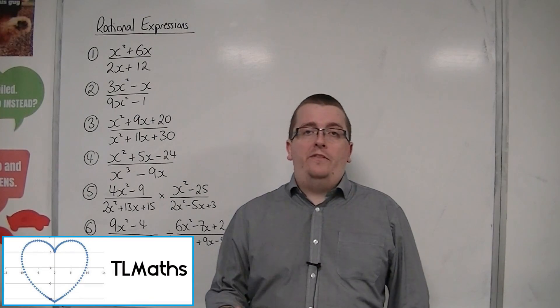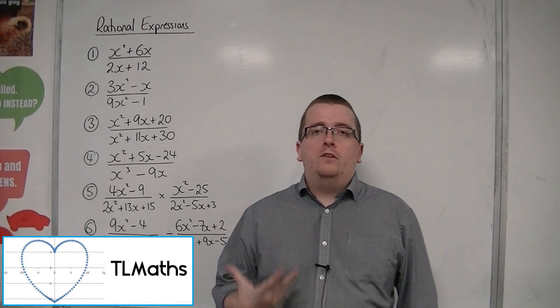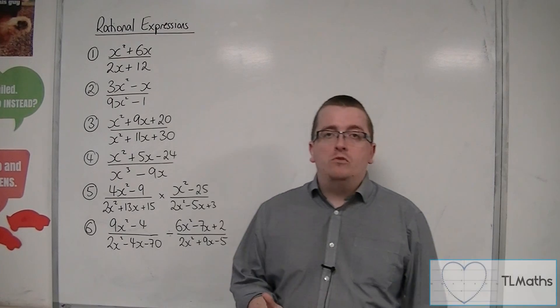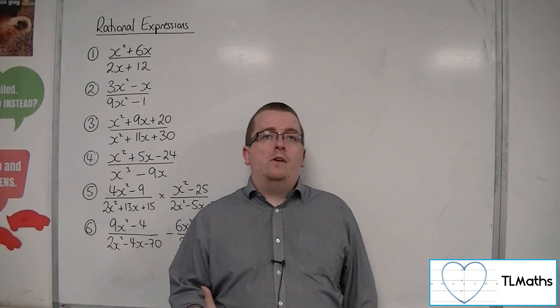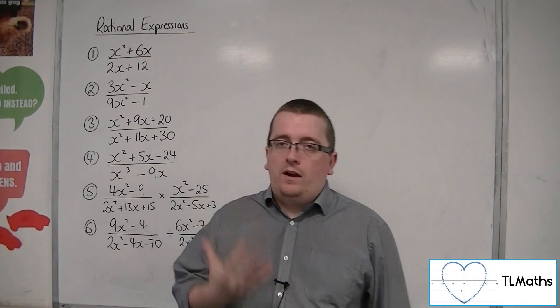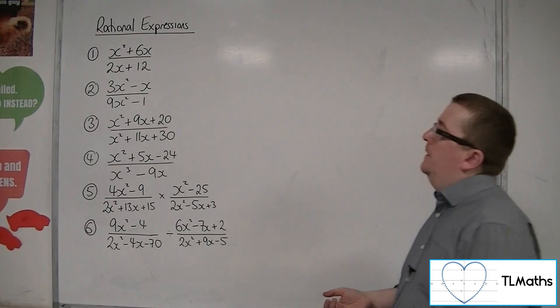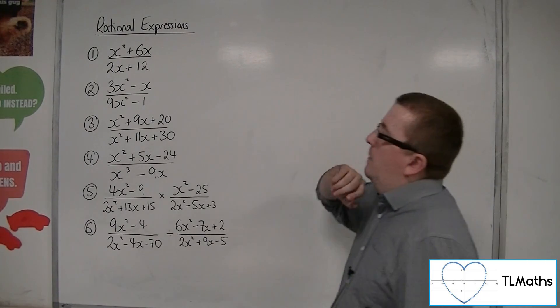Your go-to method when simplifying rational functions involving algebra is usually to factorise if you can't spot it directly. For example,